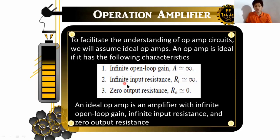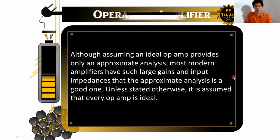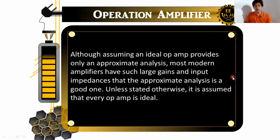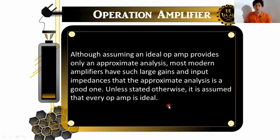So number one is infinite open loop gain. Number two, our ideal op amp has infinite input resistance or the R sub A. And for number three, our ideal op amp has zero output resistance. So an ideal op amp is an amplifier with infinite open loop gain, infinite input resistance and zero output resistance.